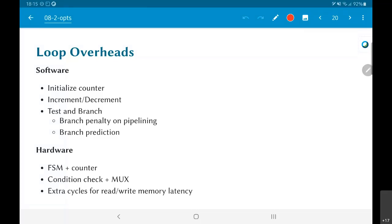In the context of software, typically what we would do is initialize a counter, we either increment or decrement depending on whether it's a for loop. Every time you are going through this you also need to test the condition and then there is a branch involved - either you need to branch back to the beginning of the loop or continue.